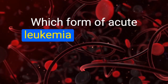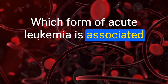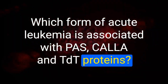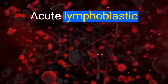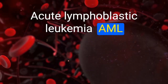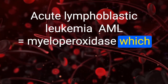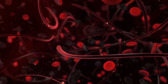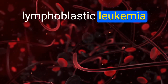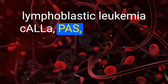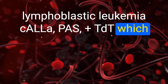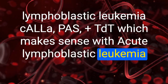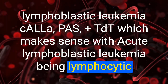Which form of acute leukemia is associated with PAS, CALLA, and TdT proteins? Acute lymphoblastic leukemia. AML equals myeloperoxidase, which makes sense with AML being myeloid. Acute lymphoblastic leukemia: CALLA, PAS, plus TdT, which makes sense with ALL being lymphocytic.